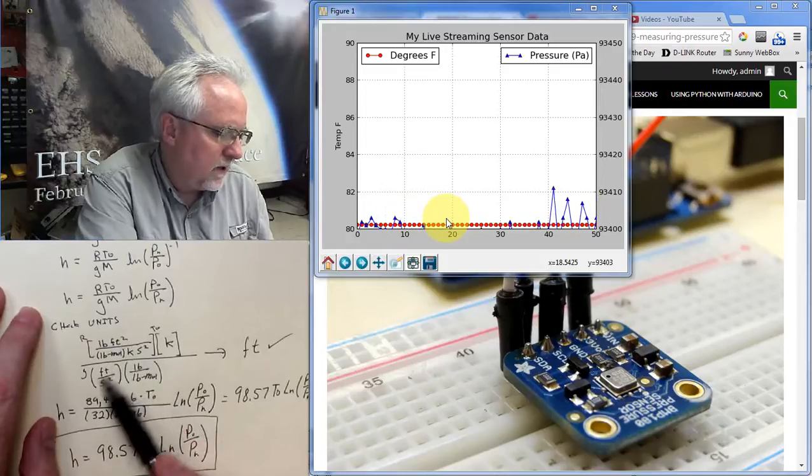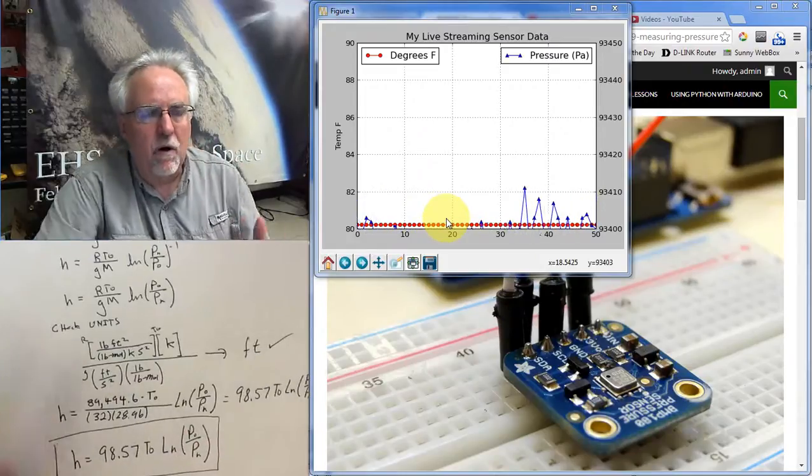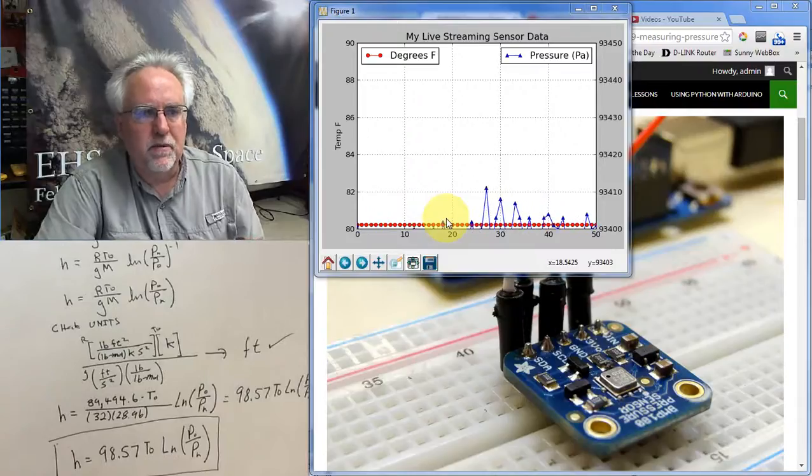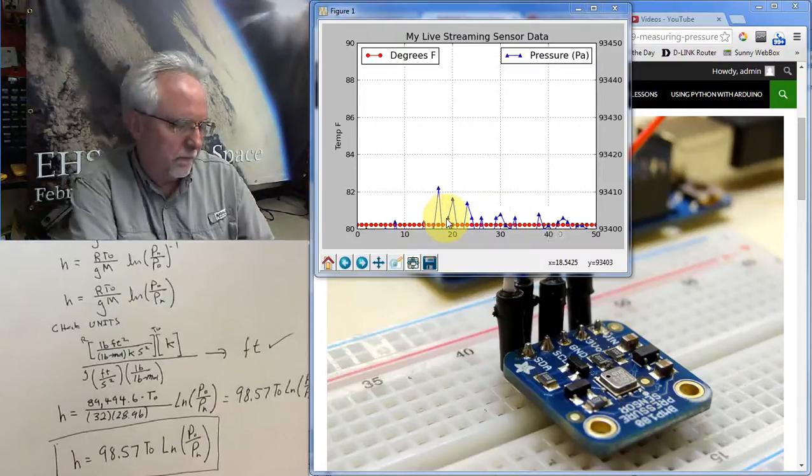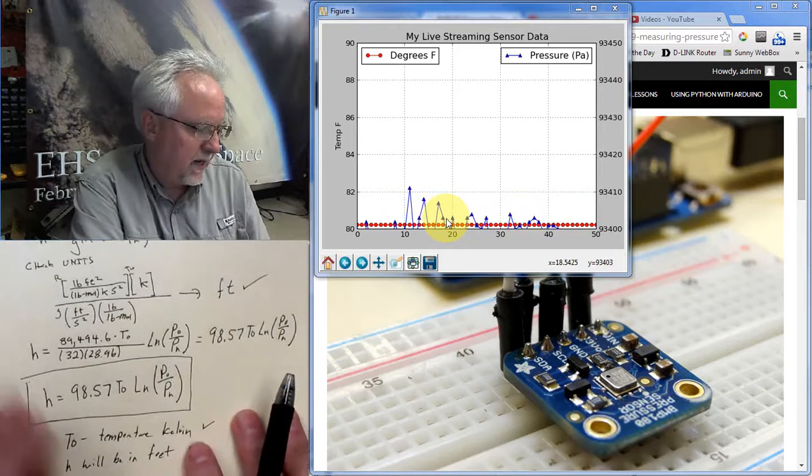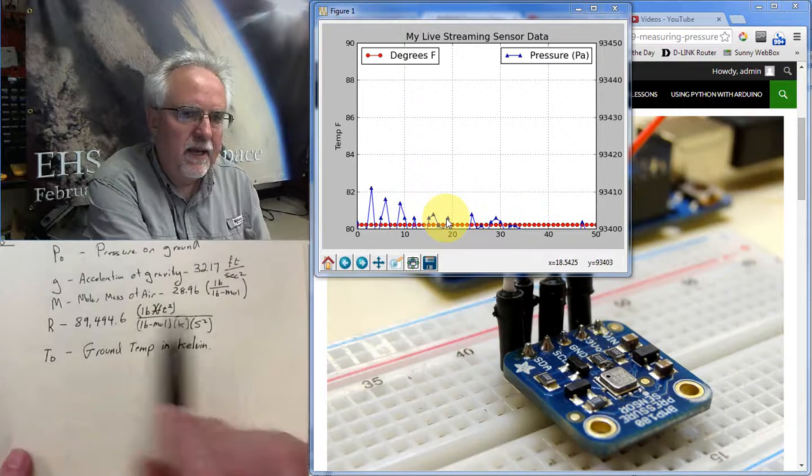Foot squared over foot is feet. And so all of these constants are right and my units are right because I end up with feet, which is what I was going for.